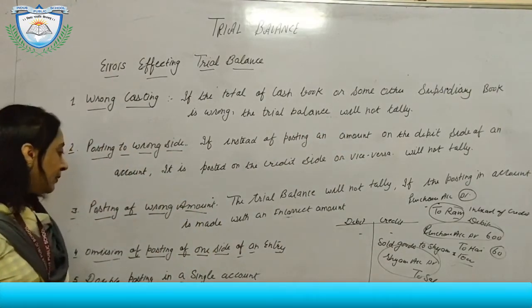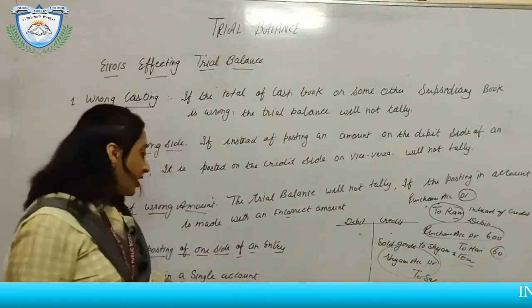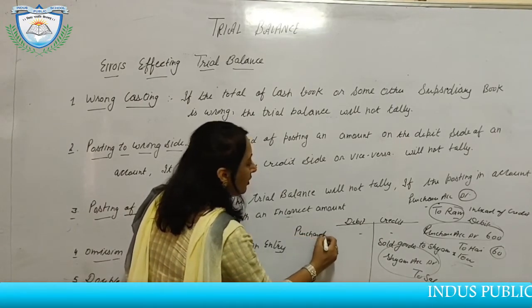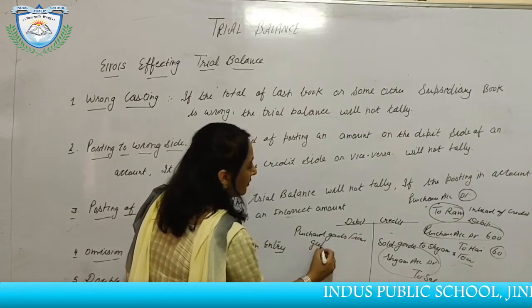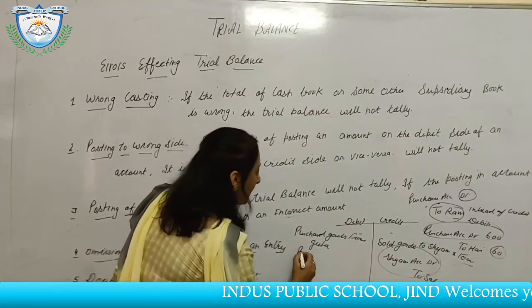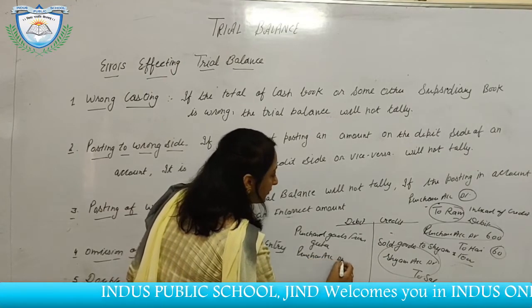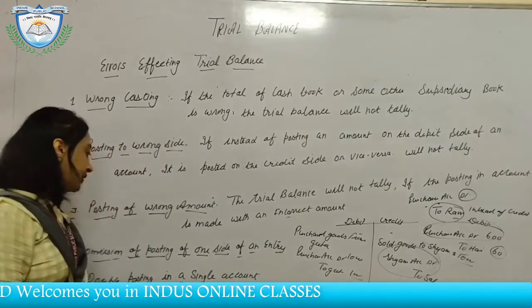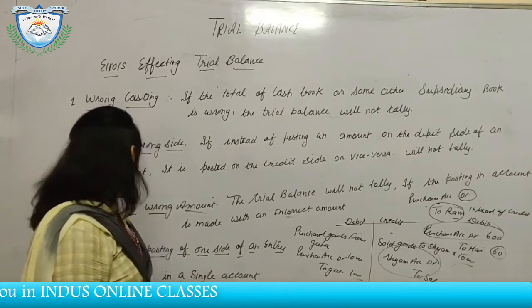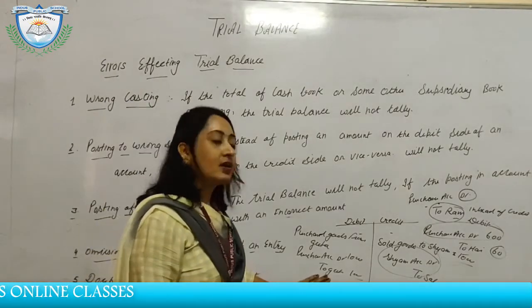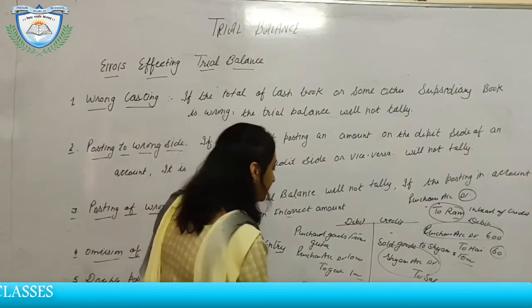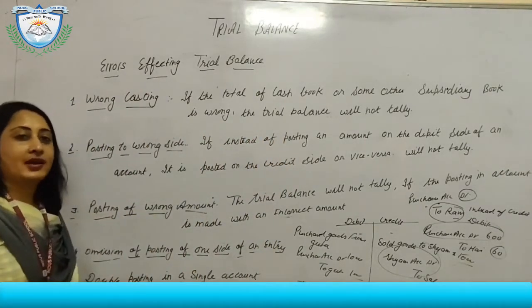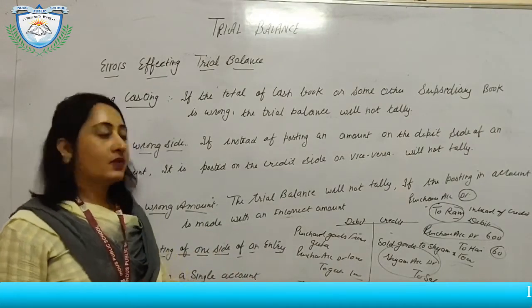The next error is double posting in a single account. If we enter double in a single account — for example, we have purchased goods from Gita, and the entry is Purchases account debited to Gita for rupees 1,000 — but we have done double posting in Gita's ledger account, then the total will not tally. From this error we can easily find out and disclose our errors.